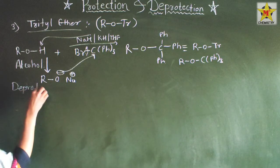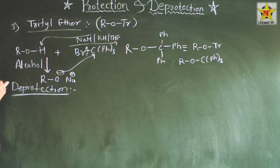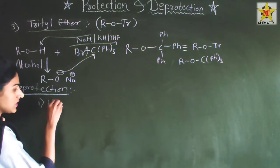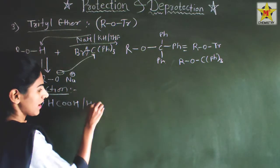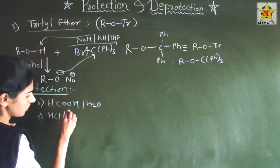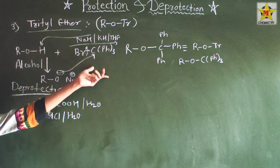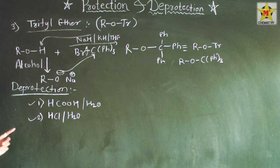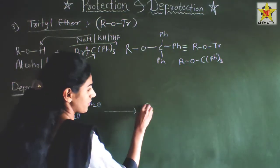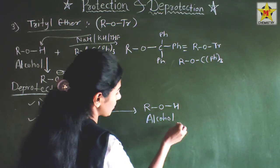For deprotection of the trityl functional group, we use formic acid (H-COOH) in aqueous condition, or HCl in presence of water. By these reagents, the trityl functional group is deprotected and formation of R-O-H, the alcohol, occurs.